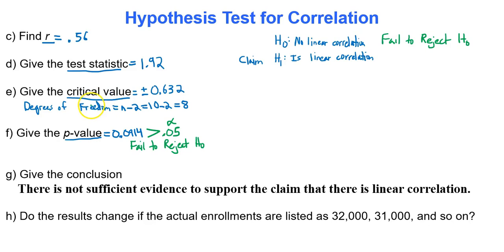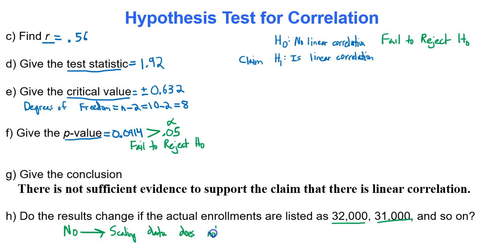Would the results change if we gave enrollments as 32,000 and 31,000 instead of 32 and 31? The answer is no, because scaling data does not affect correlation. Scaling the data would not affect the correlation coefficient or any of the calculations in this test. That's how to run a test for linear correlation. Thanks for watching.